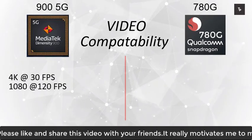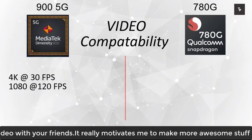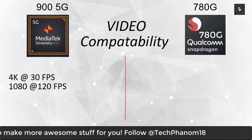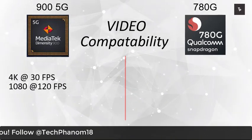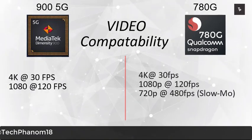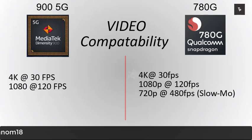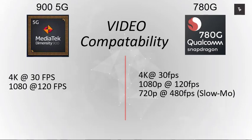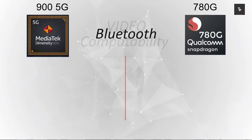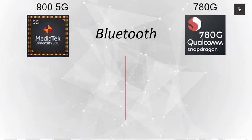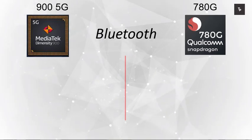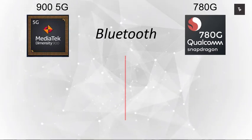On the video compatibility side, the Dimensity 900 supports 4K at 30fps and 1080p at 120fps. The Snapdragon 780G also supports 4K at 30fps and 1080p at 120fps, with the addition of slow motion at 480fps.